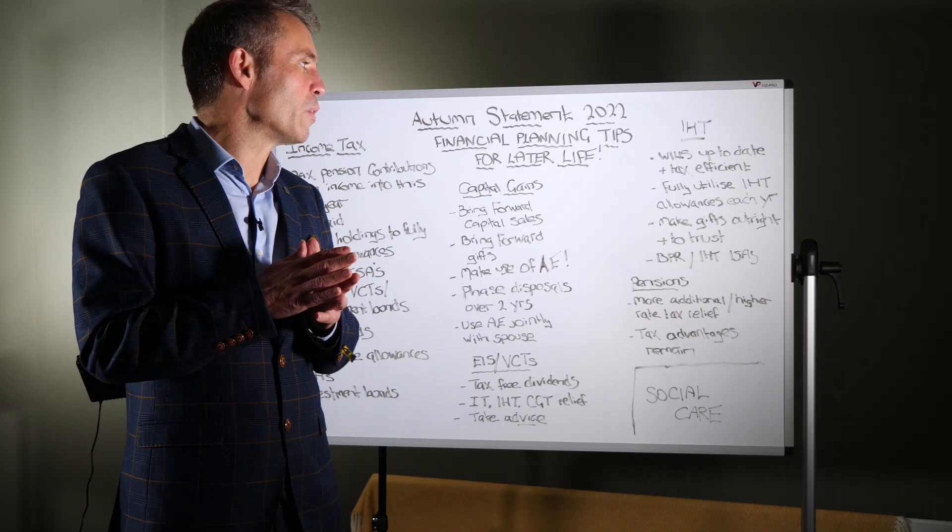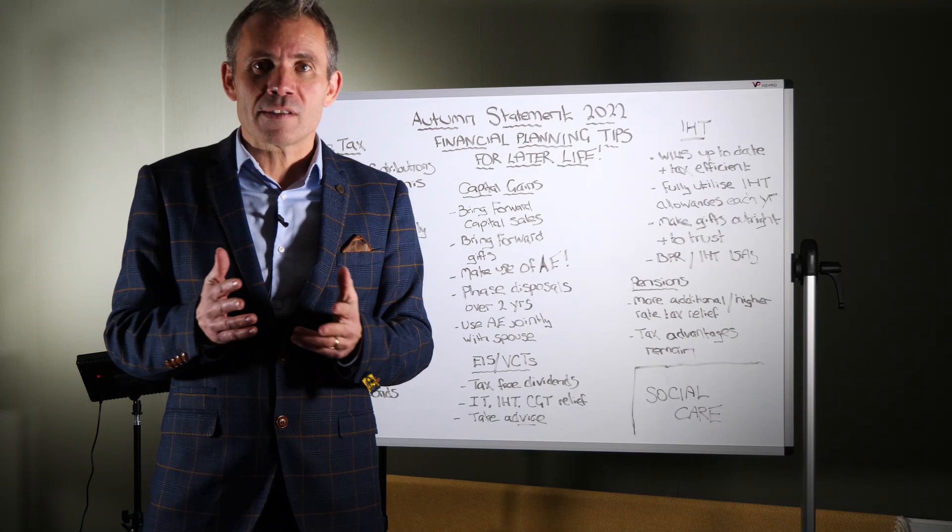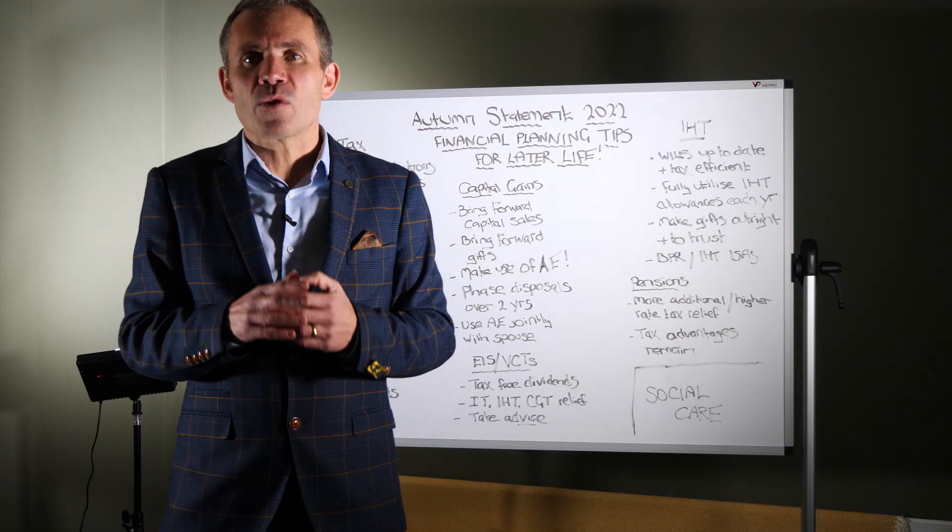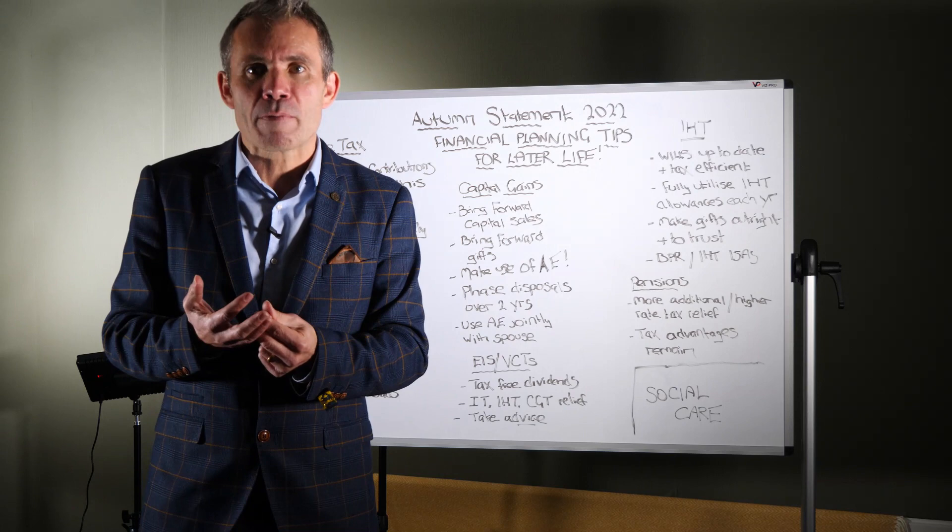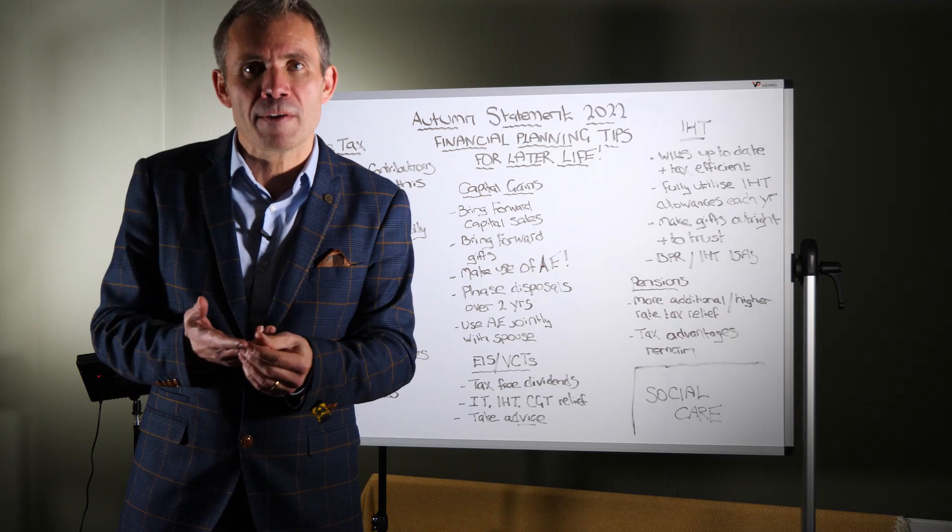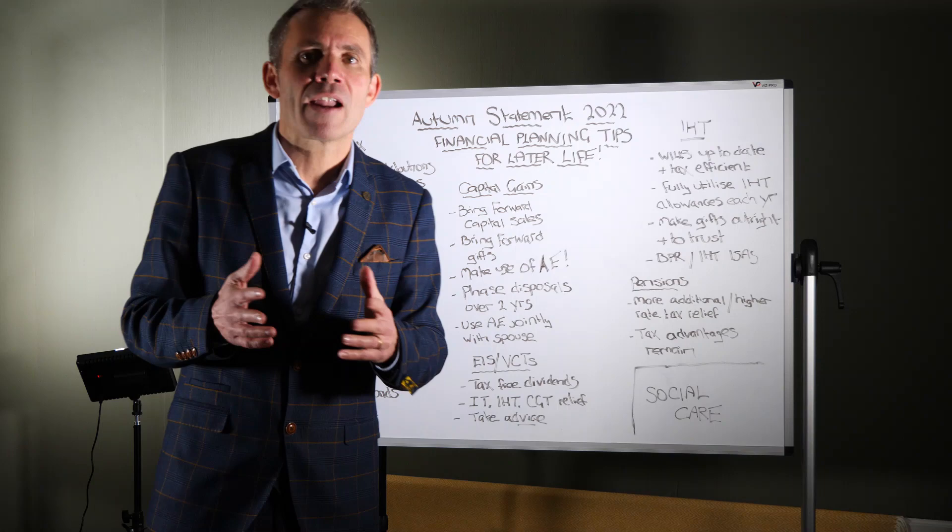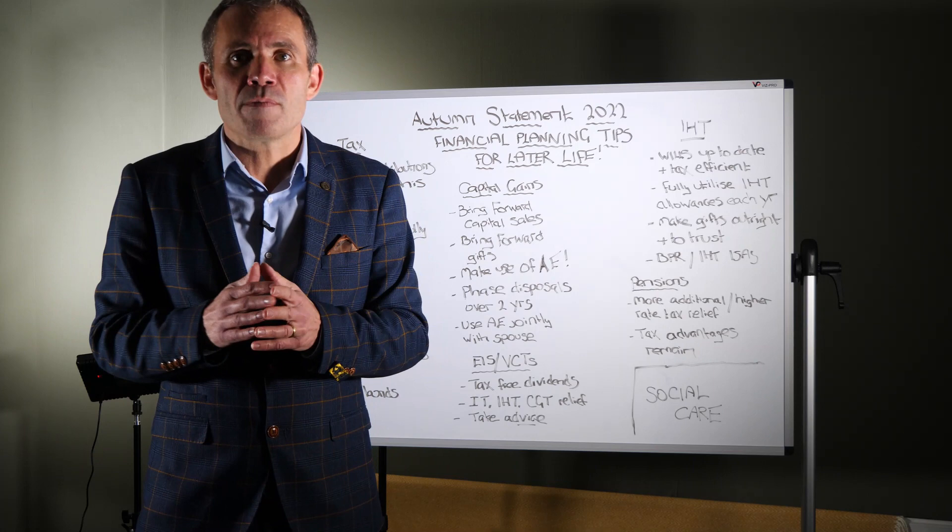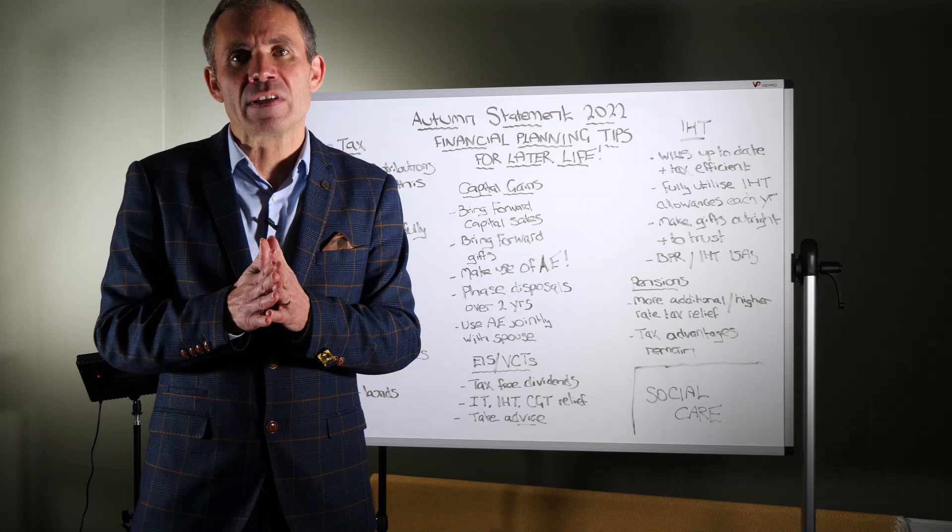So what can you do? Make sure that your wills are reviewed and up to date. Make sure you have a will. Make sure the will is written in the most tax efficient way. Fully utilise all your inheritance tax allowances. So you've got annual exemptions of £3,000. You've got your gifts out of income allowance. You've got your £250 gifts to different people allowance. So just make sure that you're using your allowance every year. Make those gifts outright to family members where if you survive seven years, those assets would then fall outside your estate for inheritance tax purposes.